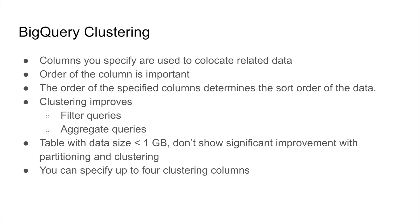When doing clustering in BigQuery, the columns you specify to cluster are co-located. The order of the columns is really important because it specifies the sort order of the data. For example, if you are clustering on columns A, B, and C, your table would be sorted first on column A, then on column B, and then on column C.